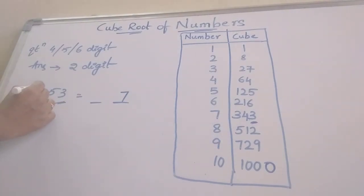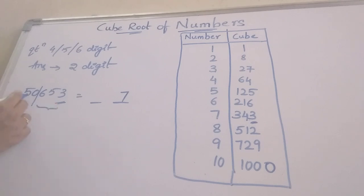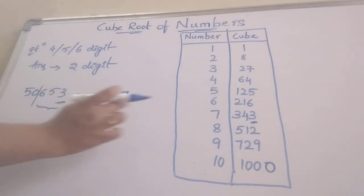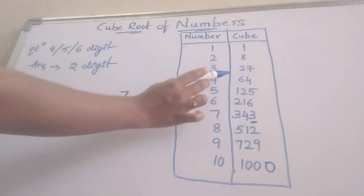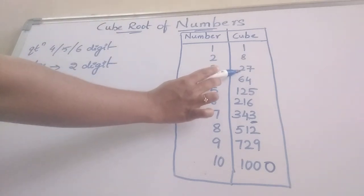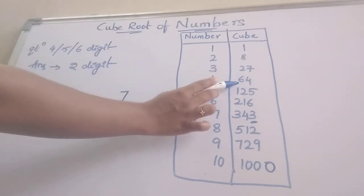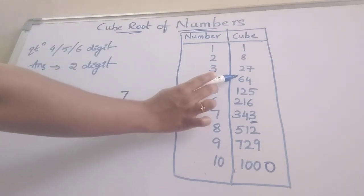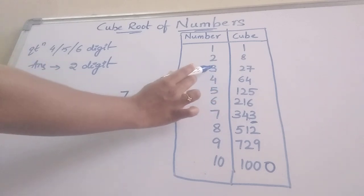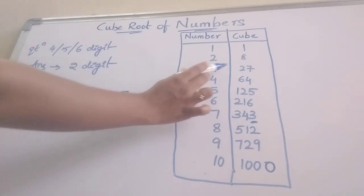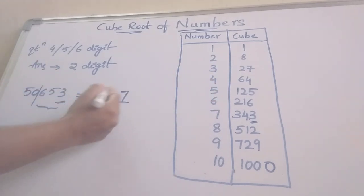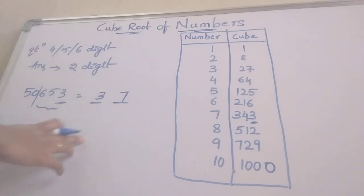After that we omit the last 3 digits and look at 50. Where does 50 lie? It lies between 27 and 64. We take the least number, which is 27, corresponding to 3. So the answer is 37.